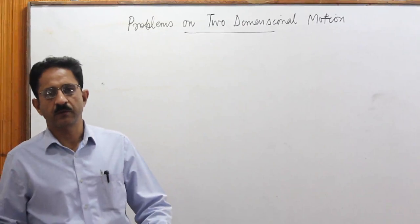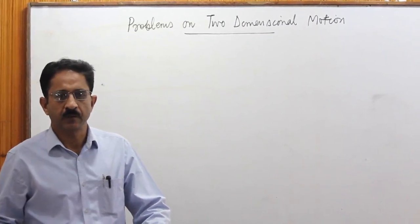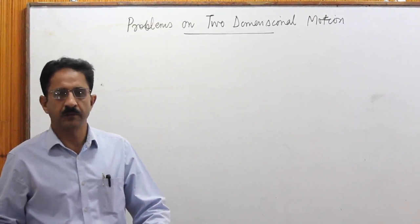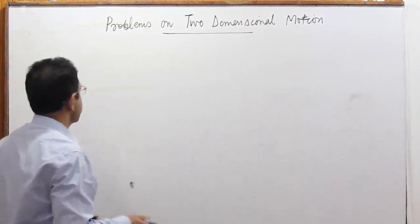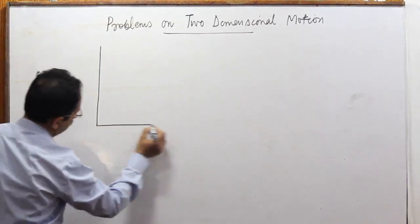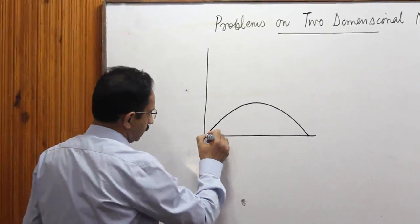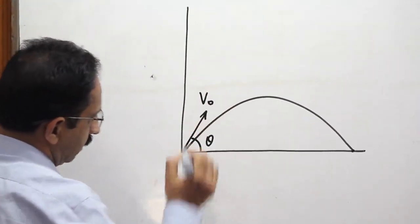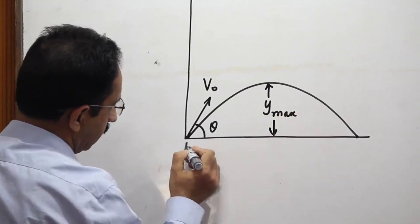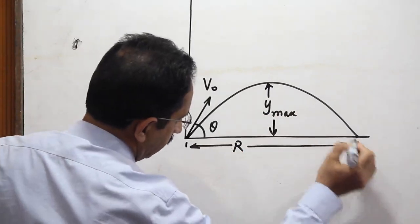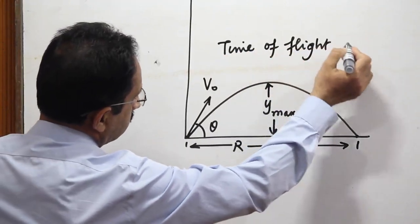Welcome to this lecture. Our today's topic is solving some numerical problems related to motion in two dimensions. You are already aware about projectile motion, which is one of the cases of motion in two dimensions. In the previous lectures, we derived expressions for three quantities related to the motion of a projectile fired at an angle theta with respect to the horizontal. These are Y maximum, which is the maximum height, range, which is the distance between point of launching and point of landing, and the total time the projectile spends in air, called time of flight T.